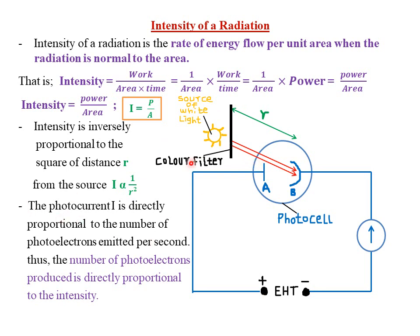A color filter helps extract a specific color from white light. The photocurrent i is directly proportional to the number of photoelectrons emitted per second. The number of photoelectrons produced is directly proportional to the intensity, because the more the intensity, the more photoelectrons emitted, and the more the current that flows through the circuit.